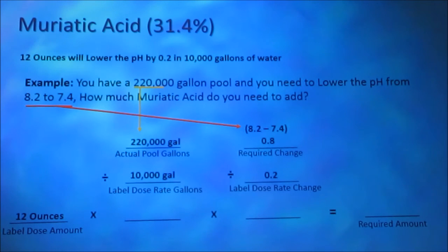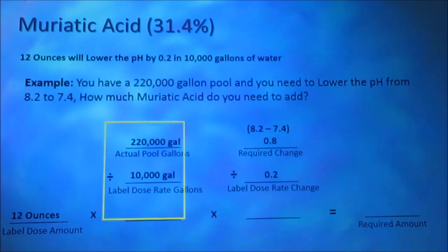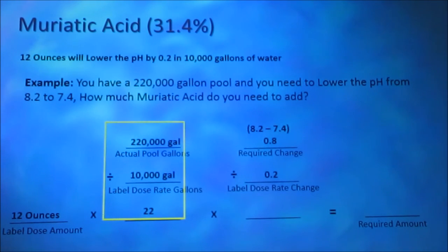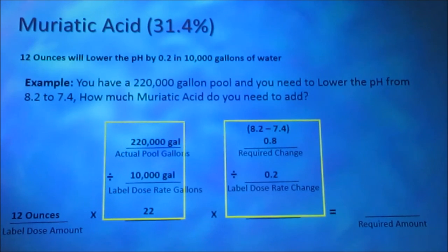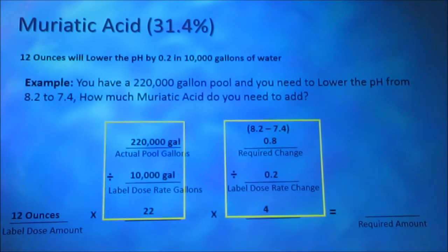Our actual pool gallons is 220,000 gallons. Our required change is 0.8 — we're at 8.2 and we want to lower it to 7.4. 8.2 minus 7.4 is 0.8. We divide 220,000 by 10,000 gallons, giving us 22. We have 10,000 gallons of water 22 times. We then divide our required change by our label dose rate change: 0.8 divided by 0.2 equals 4. We want to lower our pH by 0.2 four times.